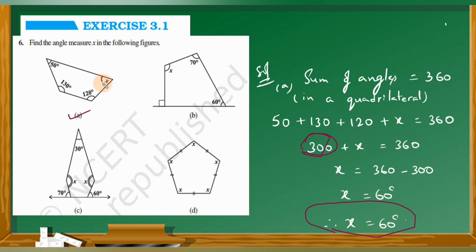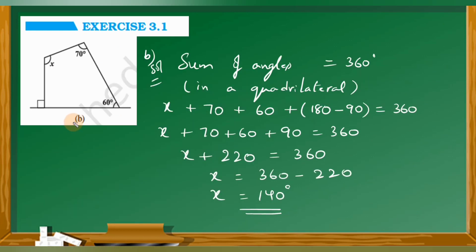So we found the measurement of x — it is 60 degrees. Understood, children? So now let us do the b figure.